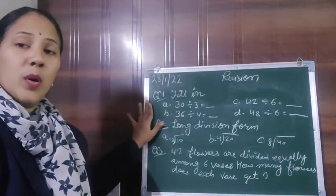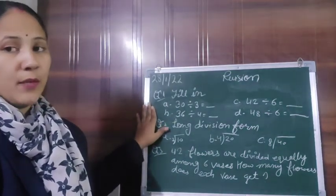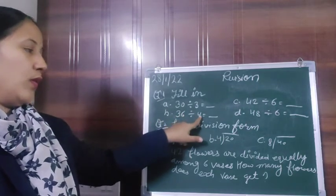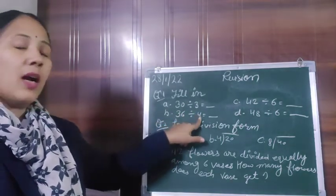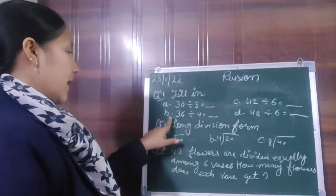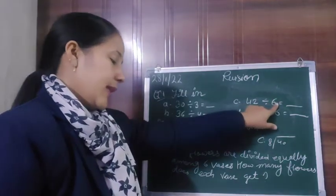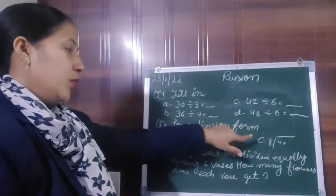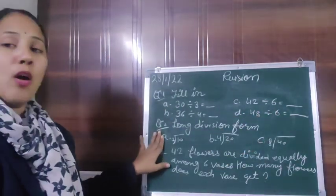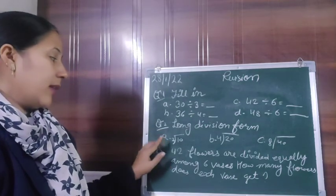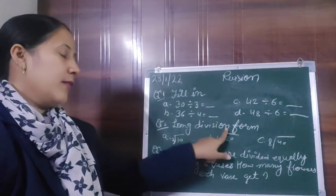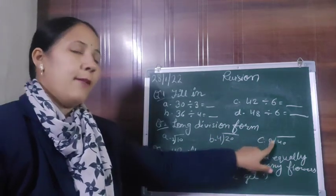So children, in question number 1 we will do by simple division method. 3 tens are 30, for 36 divided by 4 we will count the table of 4 — 4 nines are 36, 6 sevens are 42, 6 eights are 48. Here in question 2 we will do the long division method: counting table of 2 — 2 fives are 10, 4 fives are 20, 8 fives are 40.